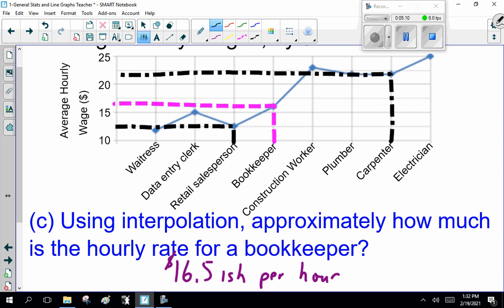Okay, so that looks to be right on the 12.50 line. Now the carpenter is just a smidge, well, halfway between 20 and 25 is 22.50. He or she is just below that. So I'm going to say about 22 now. Once again, if...